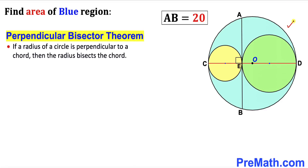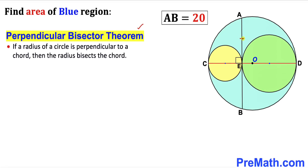As you can see in this diagram, we have a 90-degree angle between this chord and this diameter, and we know the whole chord AB is 20 units. Therefore, according to this theorem, line segment AE equals EB. If the whole length is 20 units, then AE equals 10 and EB equals 10 units as well.